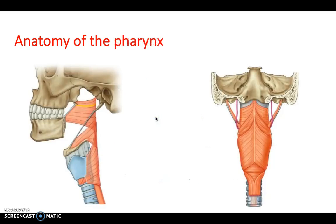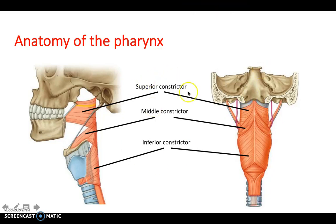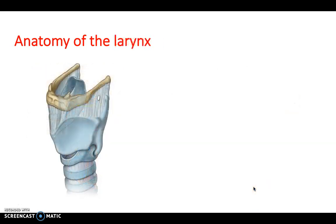Moving down to the pharynx, the muscles are the superior constrictor, middle constrictor, and inferior constrictor — logical since constriction is needed in the pharynx. Being able to label these on a diagram is important. Also be aware of the pharyngeal raphae — the dividing line between the two sides.